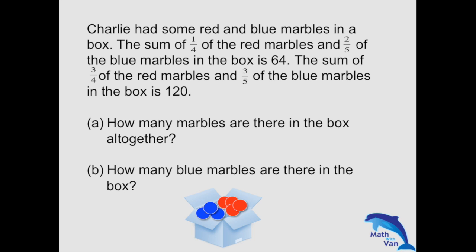Charlie has some red and blue marbles in a box. The sum of one quarter of the red marbles and two fifth of the blue marbles in a box is 64. The sum of three quarter of the red marbles and three fifth of the blue marbles in a box is 120.